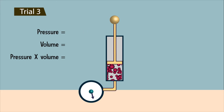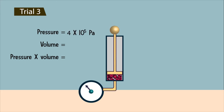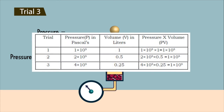In the third trial, increase the pressure further — maintain the pressure of gas at 4 × 10⁵ pascals. Measure the volume of gas: it is 0.25 liter. Calculate the product of pressure and volume: it is 1 × 10⁵. If you notice, in all the trials, as you increase the pressure of the gas, the volume of gas decreased and the product of pressure and volume always remained constant.